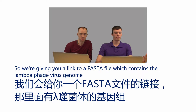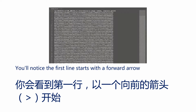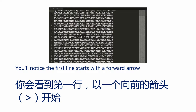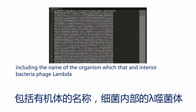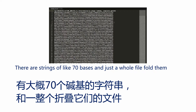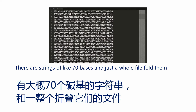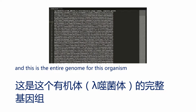We've given you a link to a FASTA file which contains the lambda phage virus genome. If you download this into your Python directory and open it up, you should see a file that looks something like this. You'll notice the first line starts with a forward arrow and then has a lot of identifying information, including the name of the organism, which is the Enterobacteria phage lambda. Following that is just a lot of bases — strings of about 70 bases — and this is the entire genome for this organism.